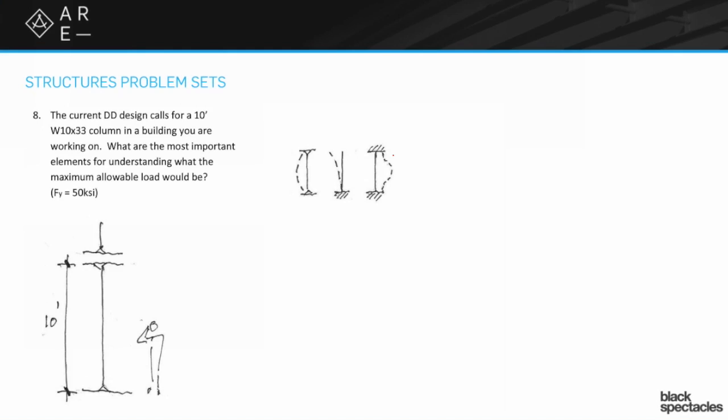Okay, here's a question about columns. This is sort of a general question. The current design development design calls for a 10 foot tall W10 by 33 column in a building that you are working on. The question is, what are the most important elements for understanding what the maximum allowable load would be? So imagine you put it into place and now you're trying to figure out what are the issues that would be at play here. We've started with a couple little sketch images there to help us along. What would you say the basic worries here would be?